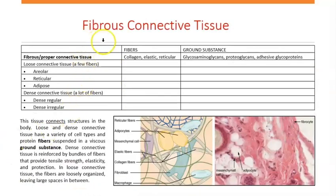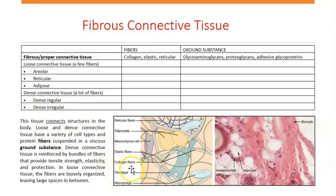The fibrous connective tissue refers to the type of connective tissue that is going to connect things. The cell in this tissue is going to be the fibroblast. These cells are going to produce fibers — collagen fibers, elastic fibers, and reticular fibers.